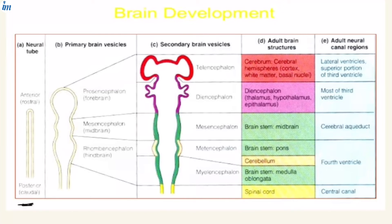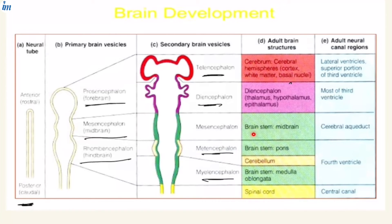The neural tube differentiates into primary brain vesicles — forebrain, midbrain, hindbrain. These primary vesicles keep on differentiating: the prosencephalon forms the telencephalon and diencephalon; the rhombencephalon forms the metencephalon and myelencephalon. From the forebrain we get the cerebral hemispheres, cortex, white matter, and basal nuclei. From the diencephalon we get the thalamus, epithalamus, and related thalamic structures. From the mesencephalon we get the midbrain brainstem. From the metencephalon we get the pons and cerebellum, and from the myelencephalon the medulla oblongata and spinal cord.